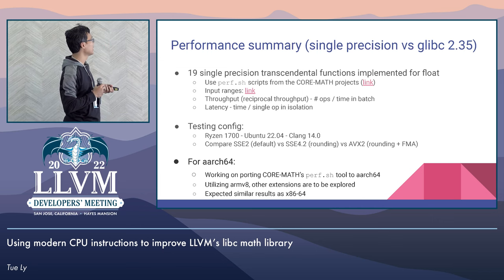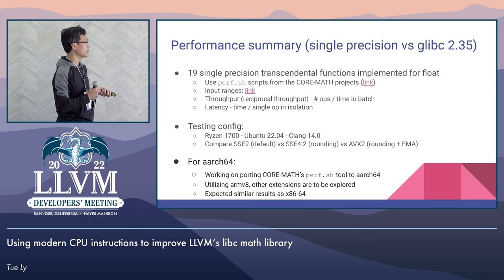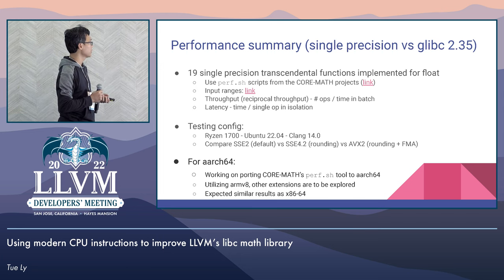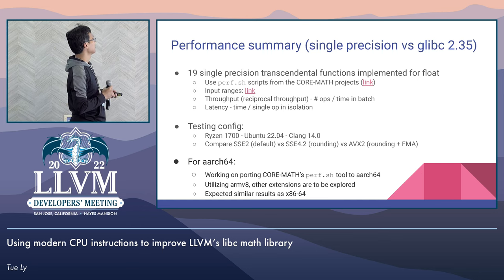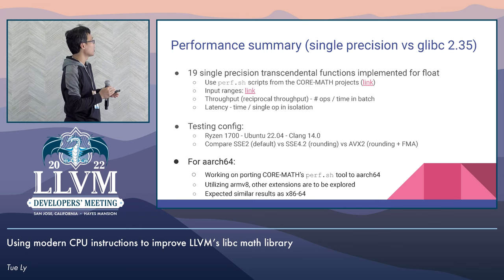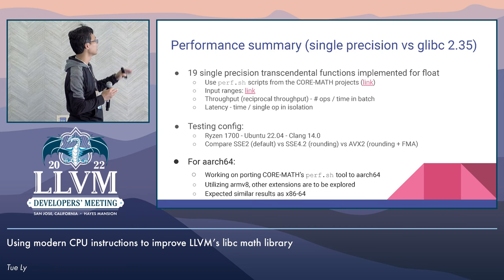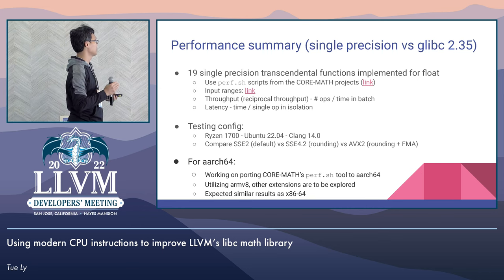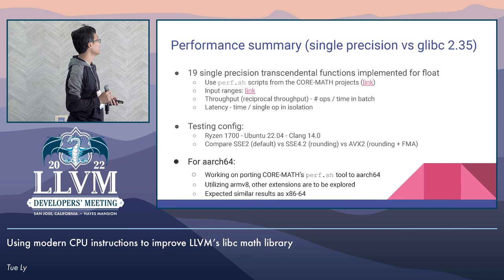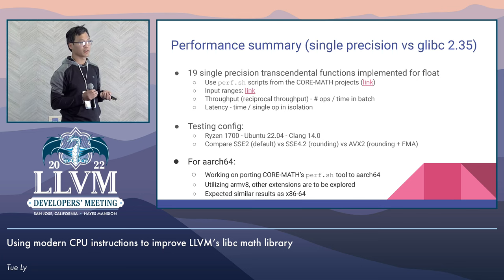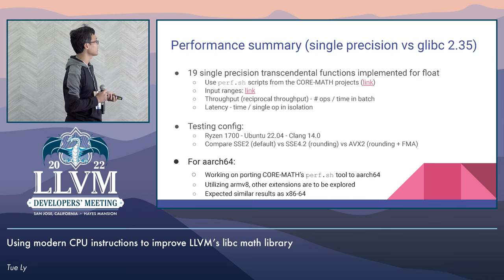We tested 19 floating-point transcendental functions for single precision. We used scripts from the Coremath project, which is another project run by researchers at Inria. From single operation functions you mostly care about throughput and latency. Some numbers are presented as reciprocal throughput so we can see the same trend as latency. We tested on Zen1, on x86-64, comparing: default SSE2, SSE2 with rounding instructions, and with both rounding and FMA. For ARM64, we currently focus on ARMv8 floating-point and haven't explored other extensions yet, but we expect a similar improvement trend.